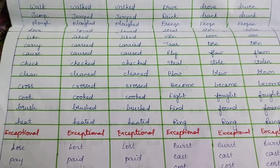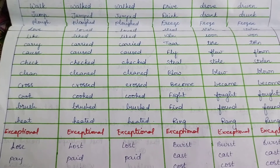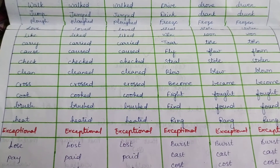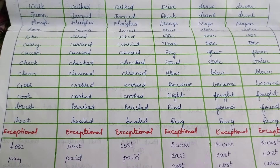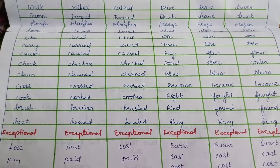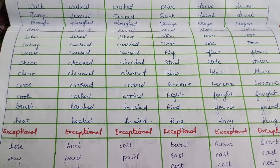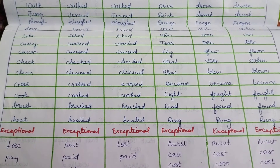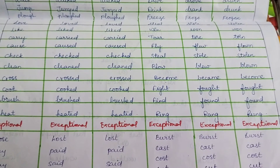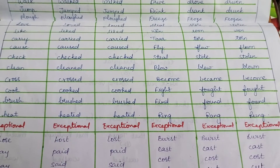Coming to irregular verbs: drive, drove, driven; drink, drank, drunk; freeze, froze, frozen; steal, stole, stolen; win, won, won; tear, tore, torn; fly, flew, flown; blow, blew, blown; become, became, become; fight, fought, fought; find, found, found; ring, rang, rang.